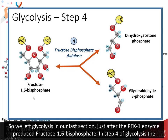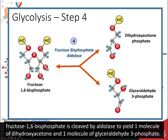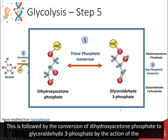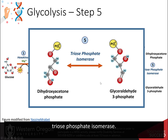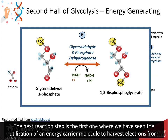We left glycolysis in our last section just after the PFK1 enzyme produced fructose 1,6-bisphosphate. In step 4 of glycolysis, the fructose 1,6-bisphosphate is cleaved by aldolase to yield one molecule of dihydroxyacetone phosphate and one molecule of glyceraldehyde 3-phosphate. This is followed by the conversion of dihydroxyacetone phosphate to glyceraldehyde 3-phosphate by the action of triose phosphate isomerase. The next reaction step is the first one where we have seen the utilization of an energy carrier molecule to harvest electrons from our food molecules.